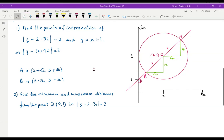My second question is, how can we find the maximum and minimum distances from the point D, 0, 1, to mod Z minus 2 minus 3i equals 2?